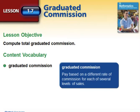Graduated commission is pay that's based on a different rate of commission for each of several levels of sales. What usually happens in graduated commission is that the more money that you earn, the higher percentage of commission you're also going to earn.